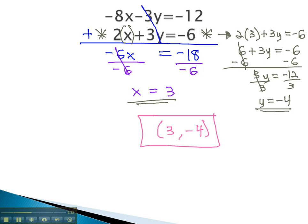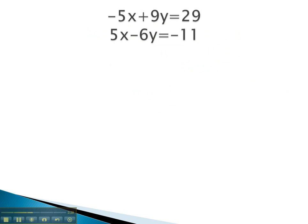Let's take a look at another example where addition eliminates one of the variables. Again, in this problem, we'll see that when we add together the left and right sides, the negative 5x plus 5x is 0. 9y minus 6y is 3y, and on the other side, 29 minus 11 is 18.